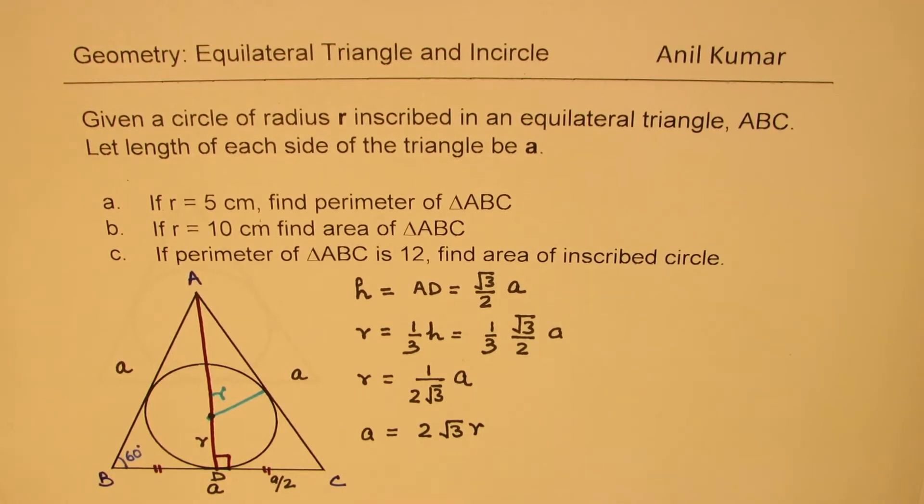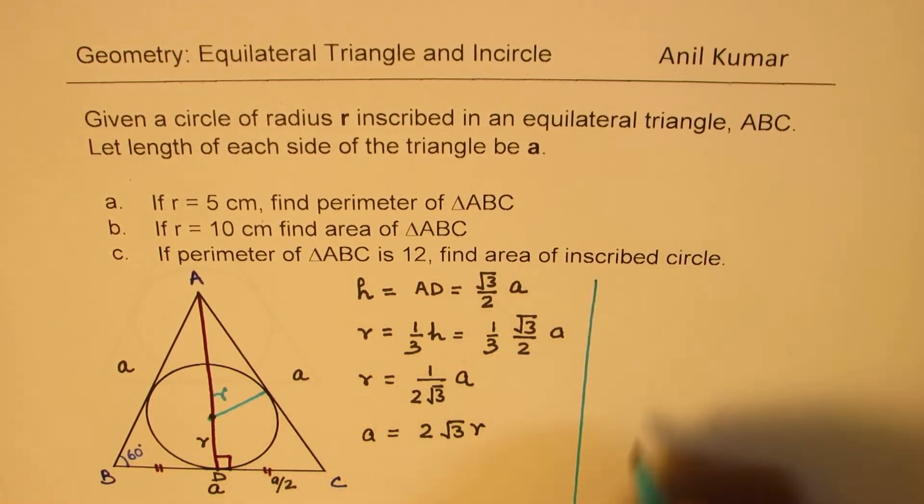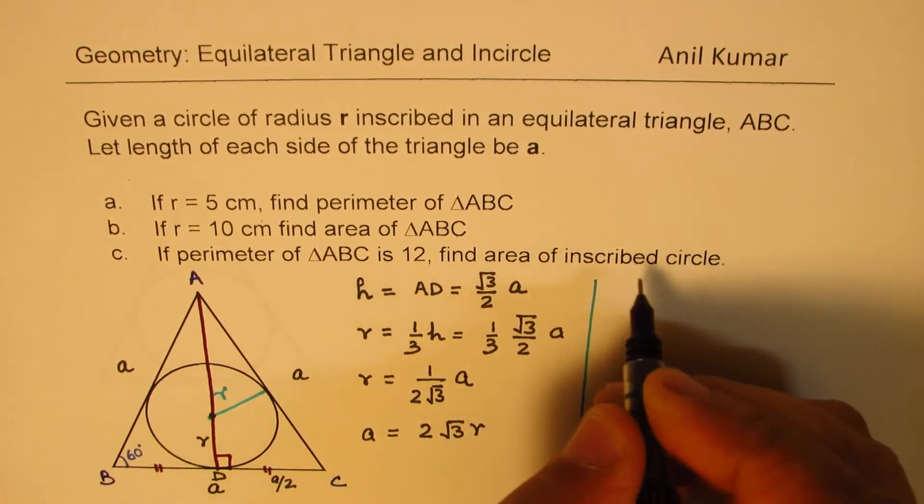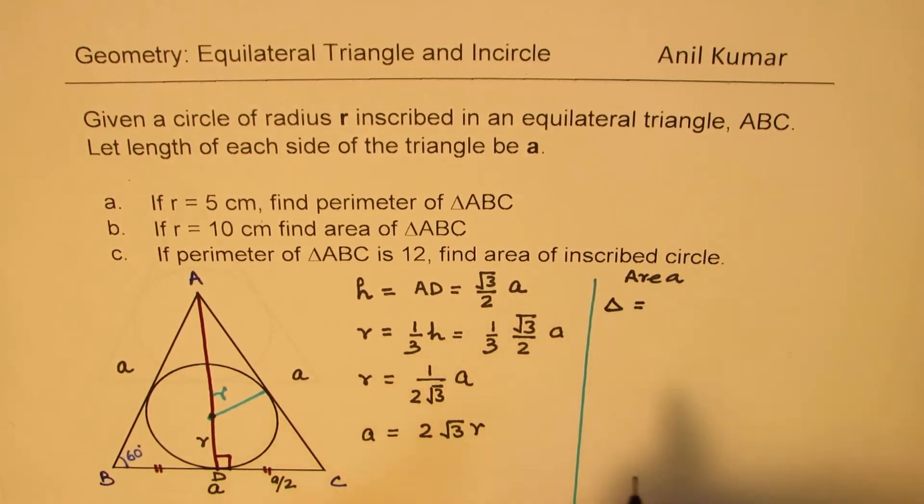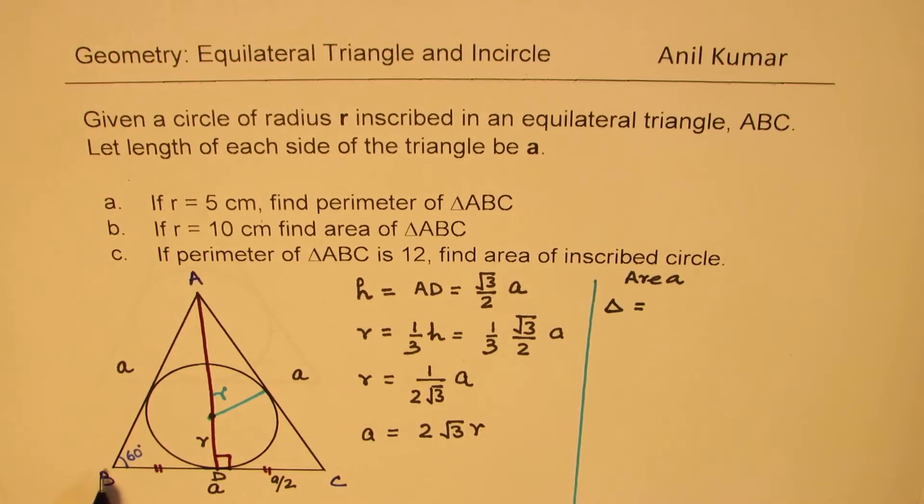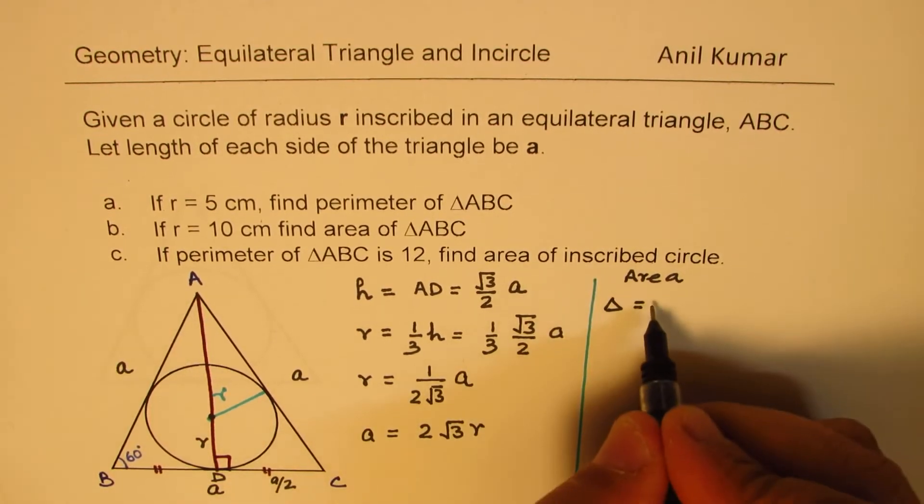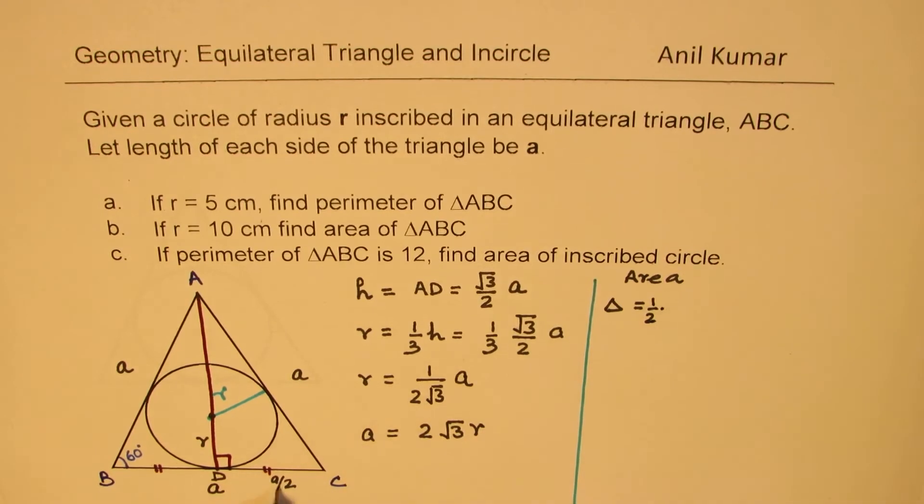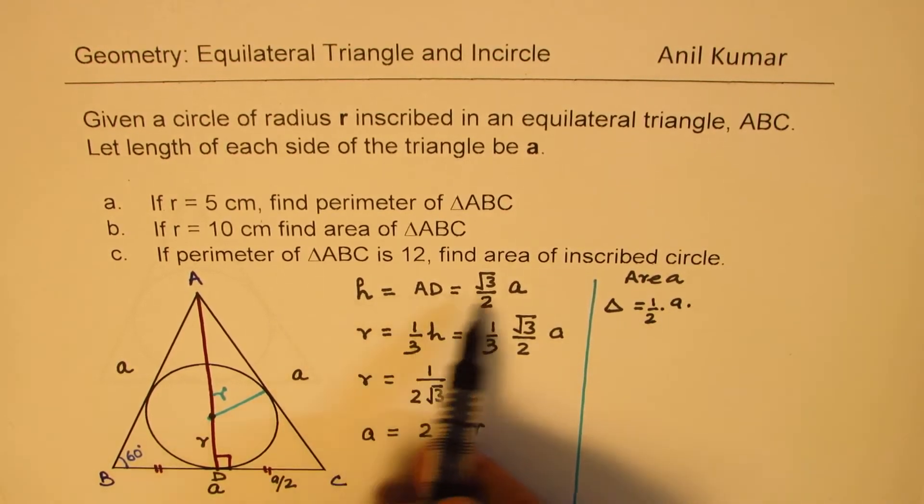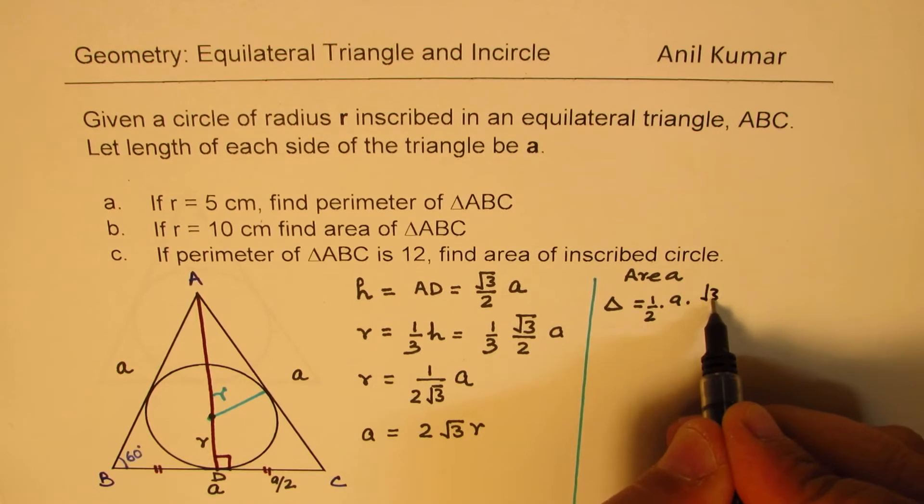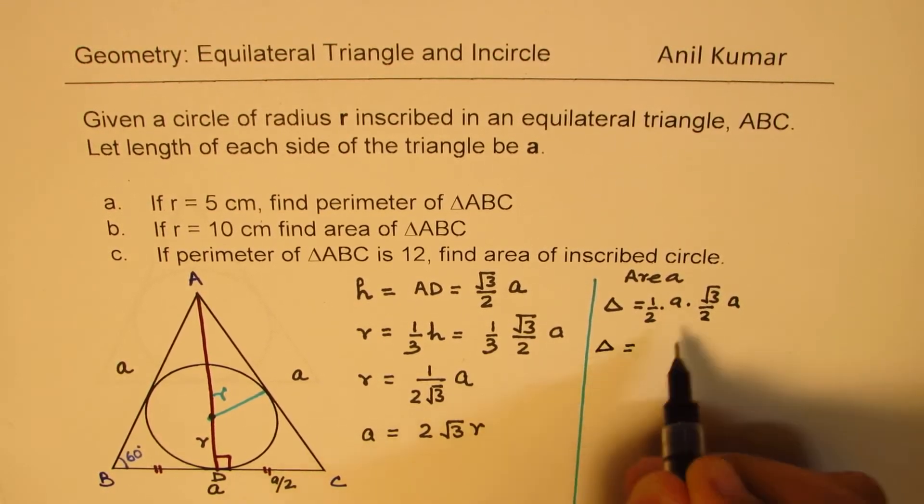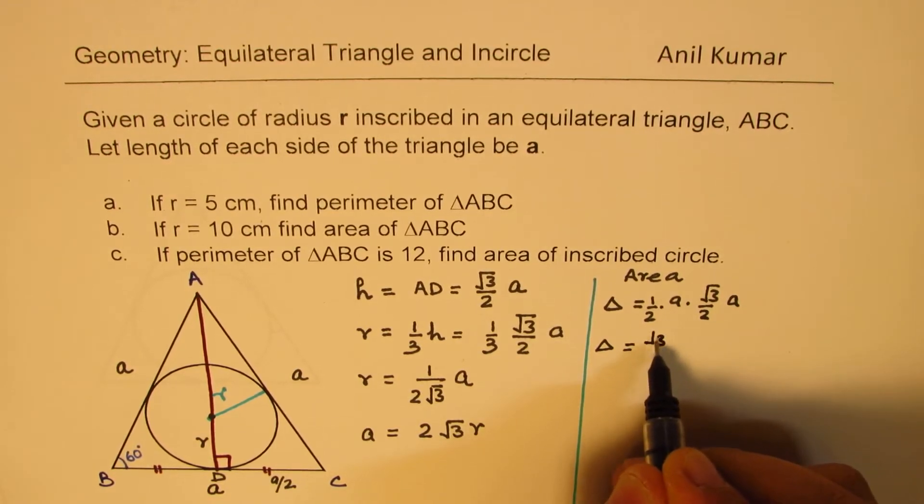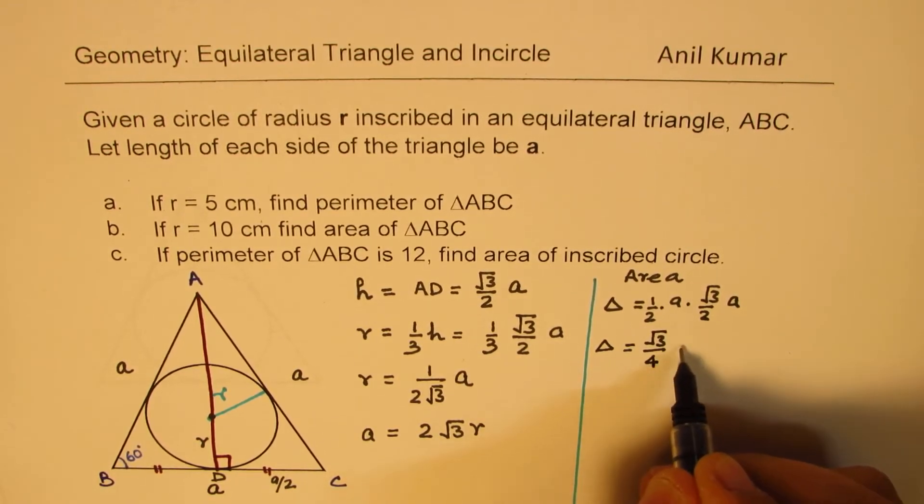As for the area of the triangle, the area equals half the base times height, which is (1/2)·a·(√3/2)a. Clearly, the area of the triangle is (√3/4)a².